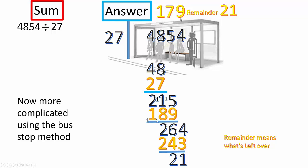So, 27 goes 179 times into that. And what's left over is 21.